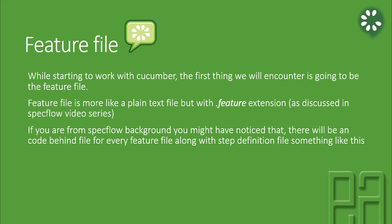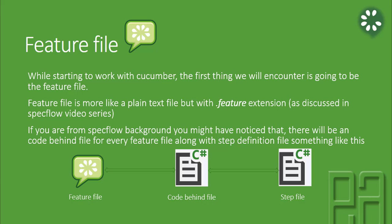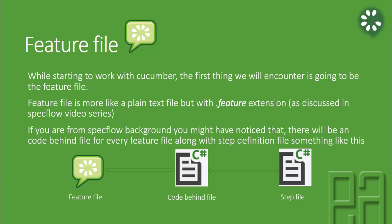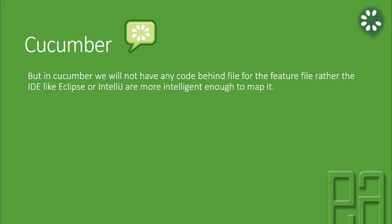If you are from a SpecFlow background, you might have noticed that there will be a code-behind file for each and every feature file, along with the step definition file. So you will have a feature file, then a code-behind file, and then a step definition file. The code-behind file and the feature file in SpecFlow are intrinsically linked — you cannot separate the code-behind file from the feature file. The step definition file is where you hold all your step implementations of the features. But in Cucumber we will not have any code-behind file for the feature file as we have in C#.